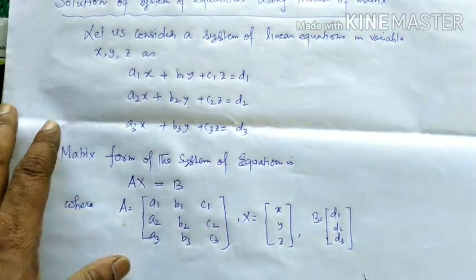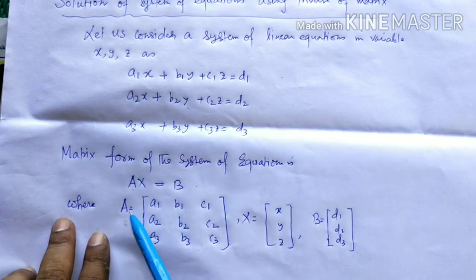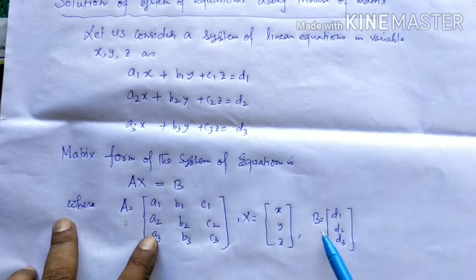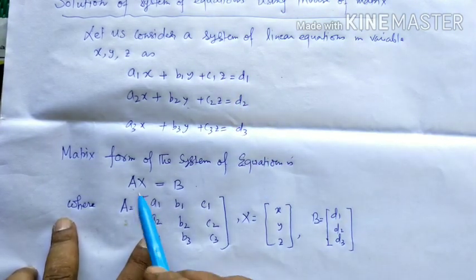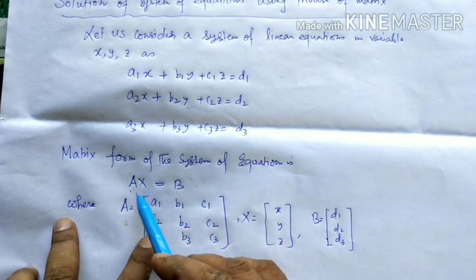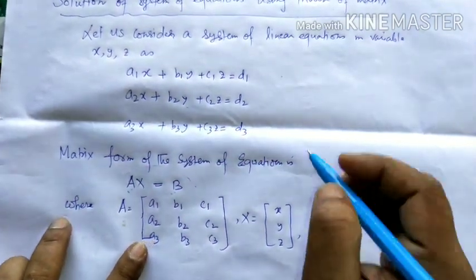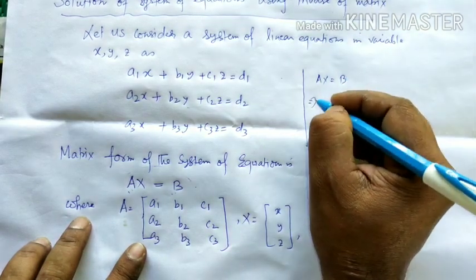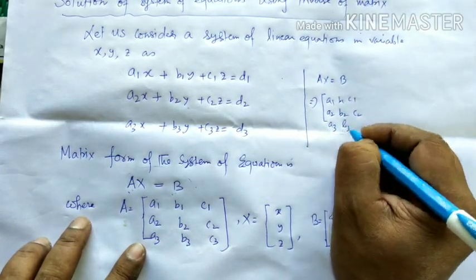This system of equations can be written in matrix form as AX = B. Here A is the coefficient matrix — the coefficients of x, y, z. X is the column matrix representing the solution of the system. B is the column matrix of the constants on the right-hand side, which is [d₁, d₂, d₃]. The coefficient matrix A is: [a₁ b₁ c₁ / a₂ b₂ c₂ / a₃ b₃ c₃].